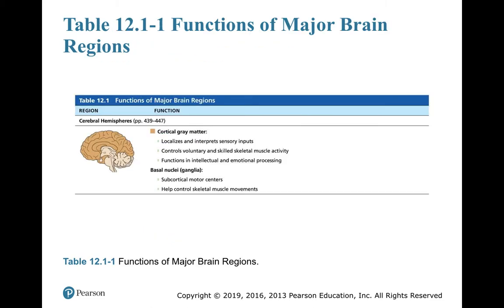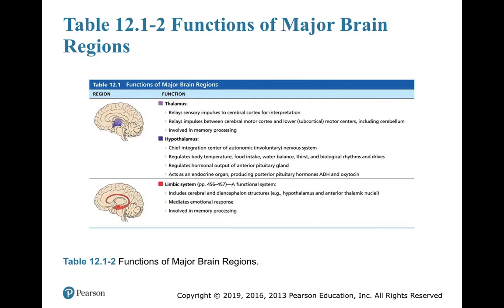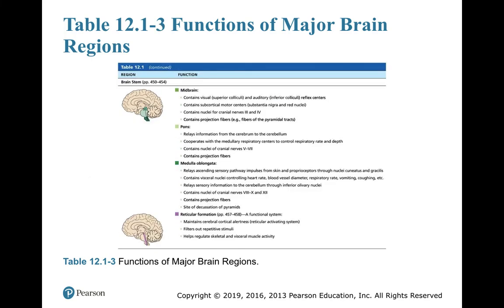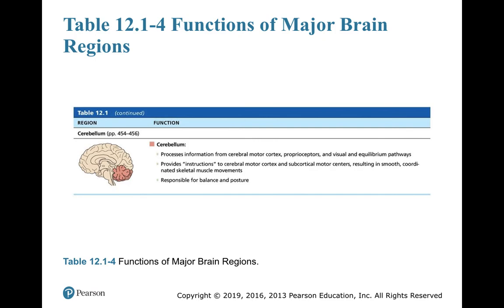To review what we've covered: we started with the cerebral hemispheres, including the cortical gray matter and the basal nuclei. From there we went to the hypothalamus, closely linked to the limbic system, and then the midbrain, the pons, the medulla oblongata, and the reticular activating system — giving us the major regions and functional groups of the brain. And I almost left off the cerebellum.